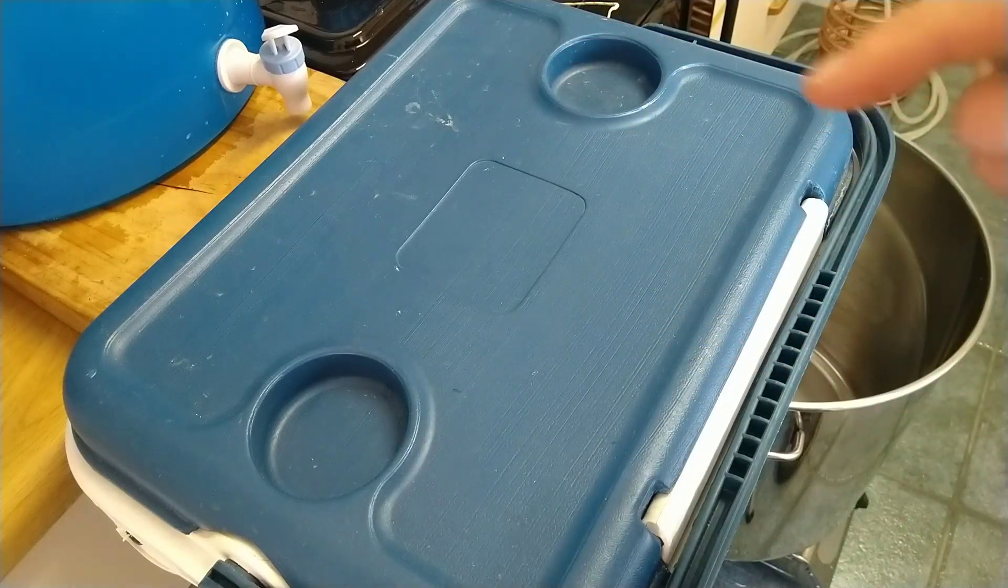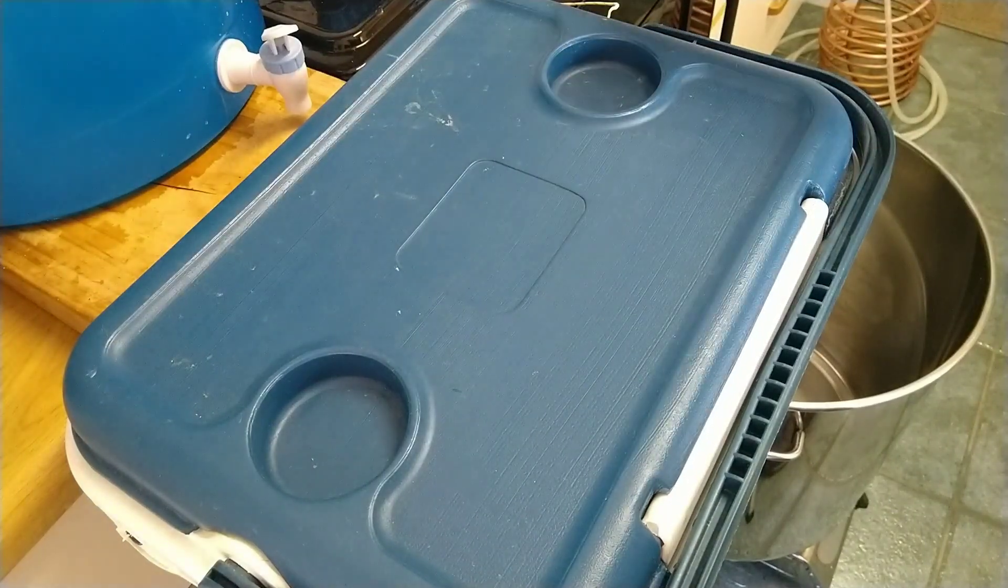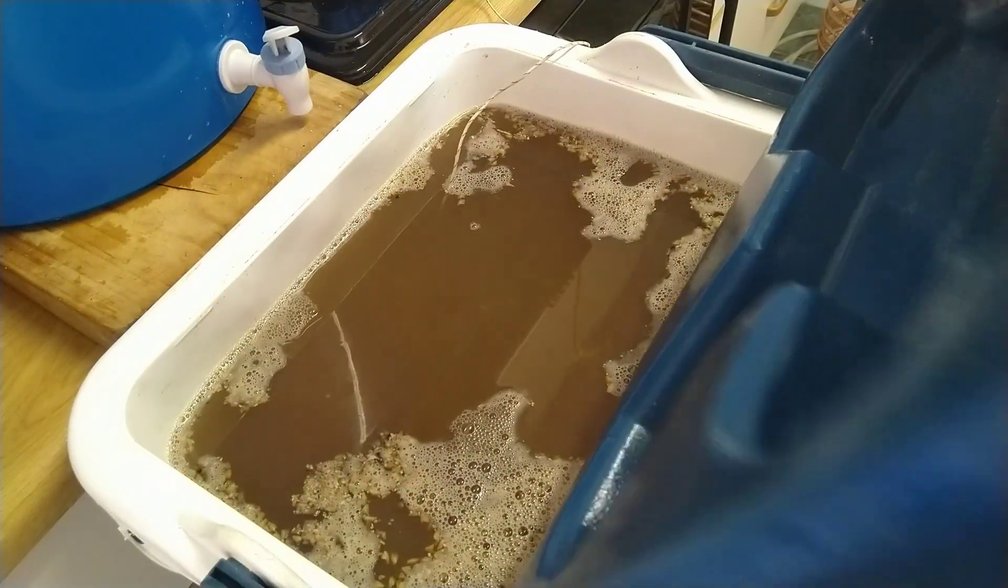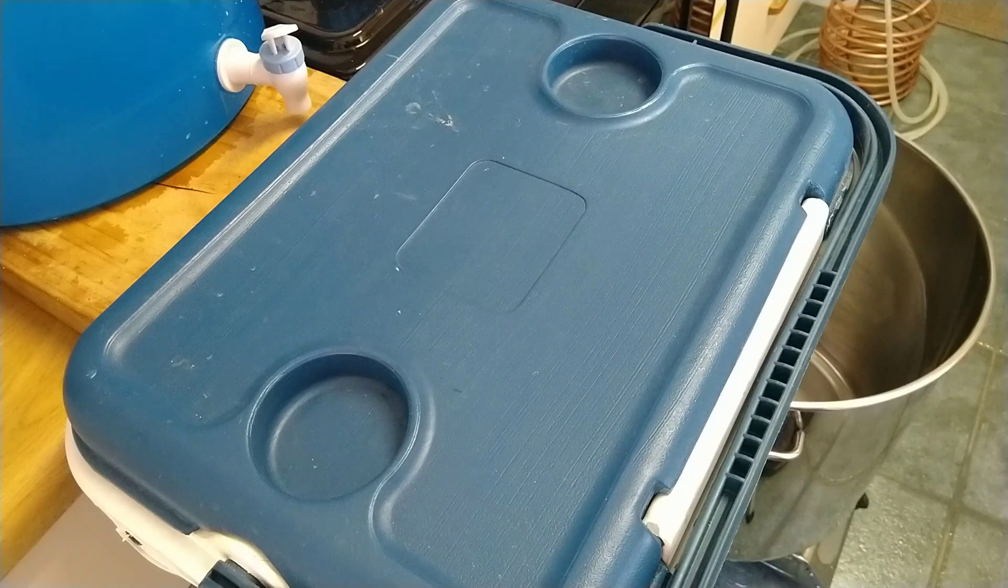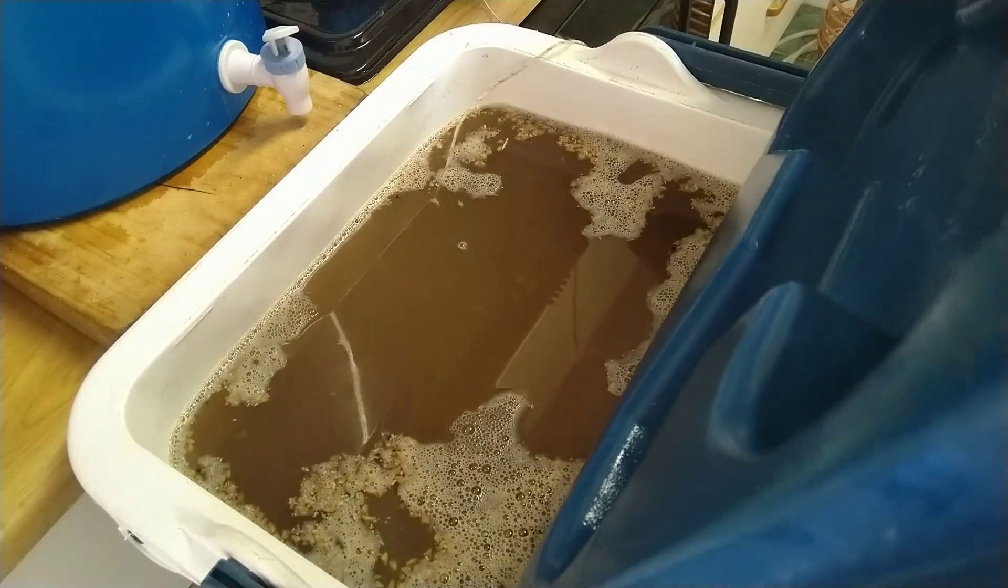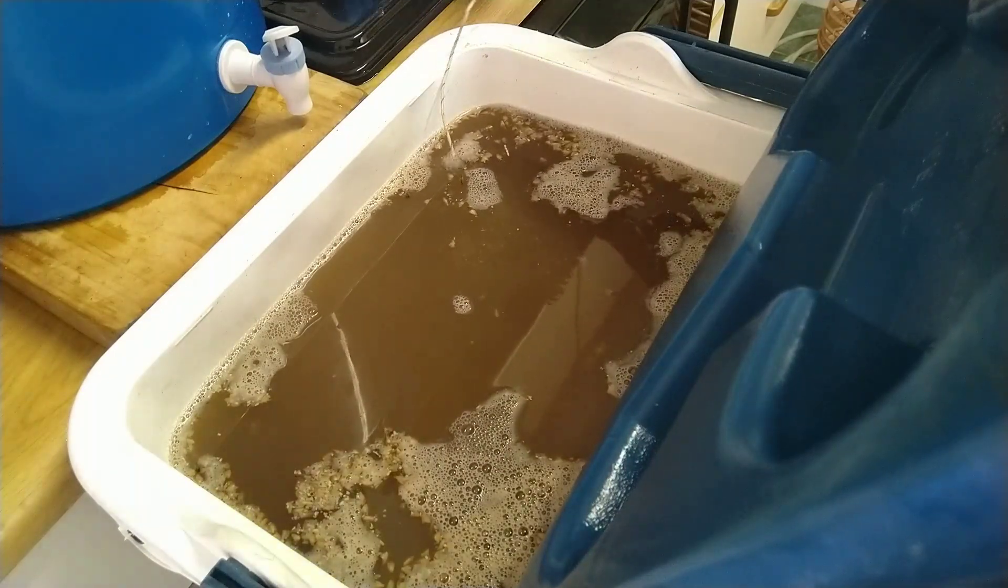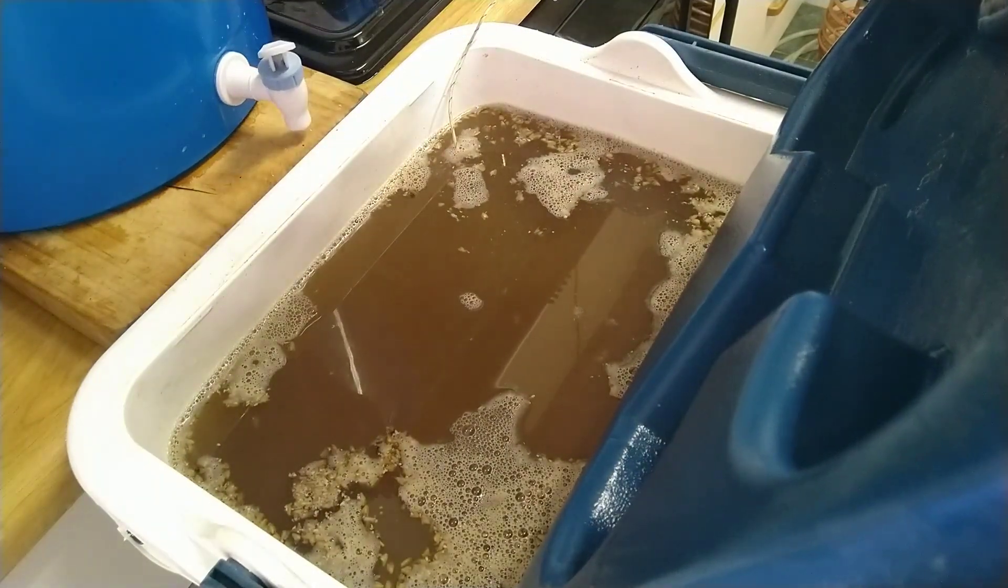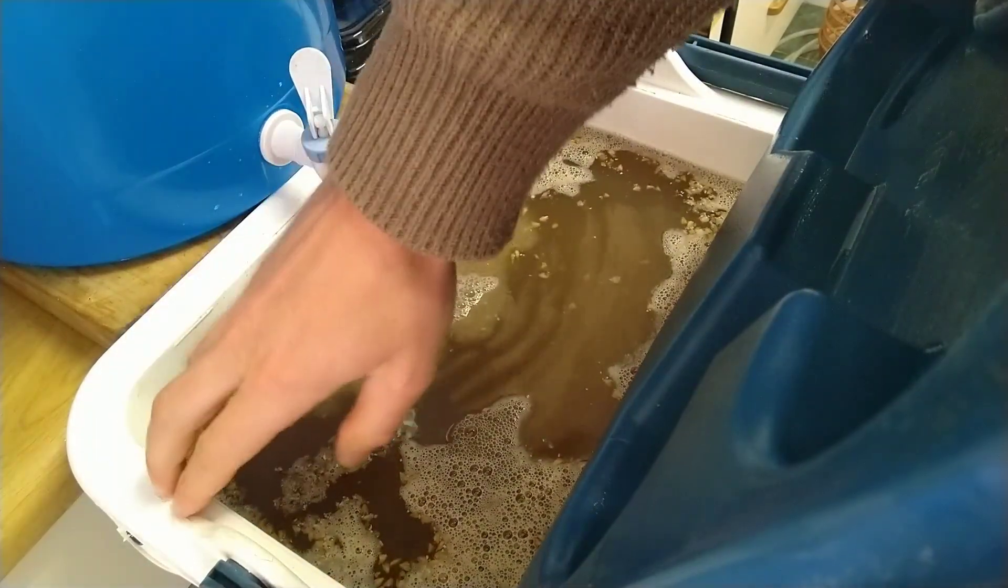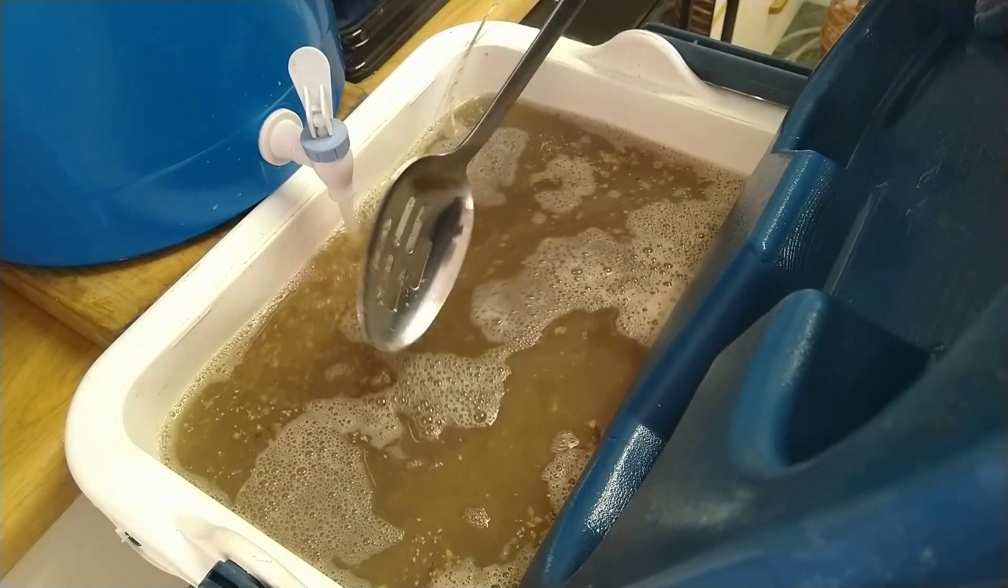Now it's time to start sparging. I'm using boiling water that was just bubbling and steaming. We're going to drain into that pot in the background. The trick is to raise the temperature because we're sitting at about 55 degrees and want to get closer to 76.